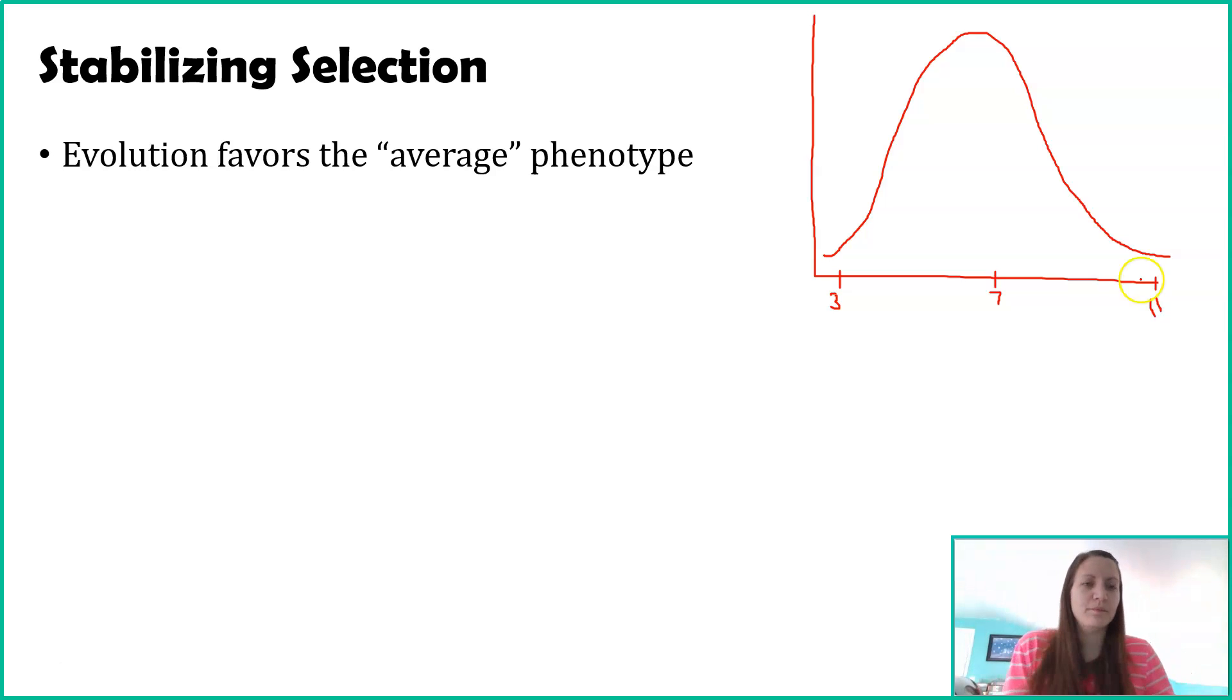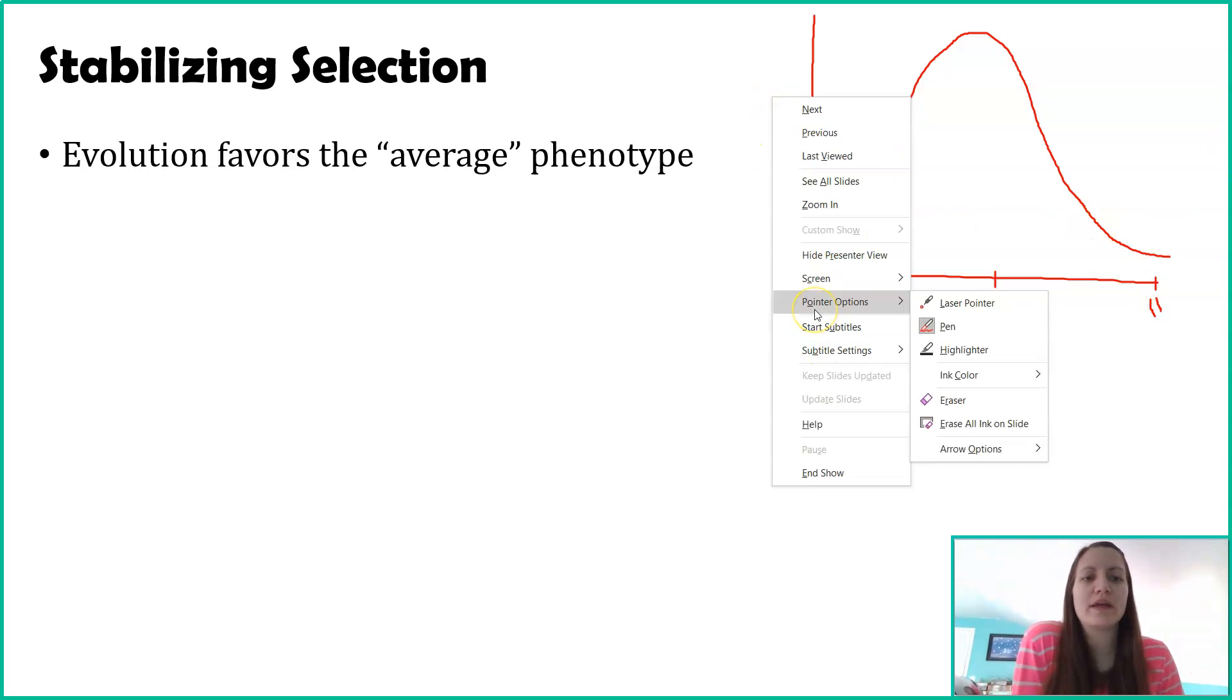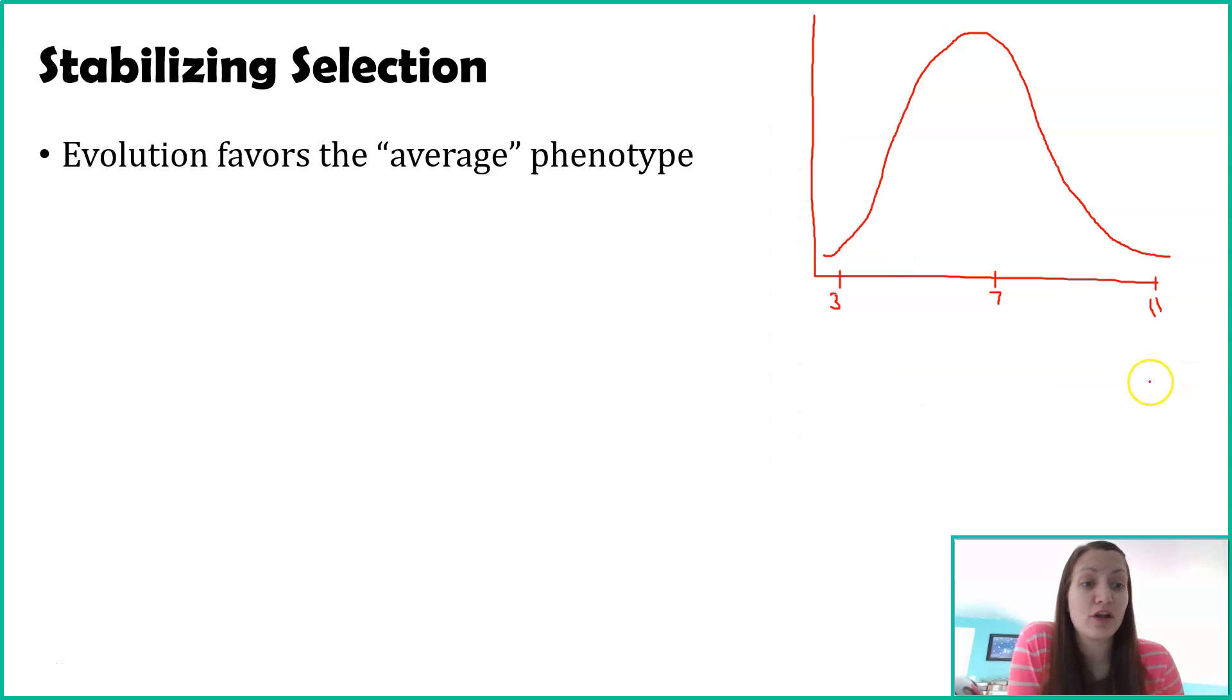Imagine we go a thousand years into the past. Do you think the three-pound babies were surviving? Do you think the 11-pound babies were surviving? Probably not, right? Because of the advent of healthcare, our understanding of baby development, and our ability to do C-sections. If we looked a thousand years ago, this bell curve probably looked a lot more like this, a very strong stabilizing selection where that seven pounds is heavily favored and the extremes not so much.